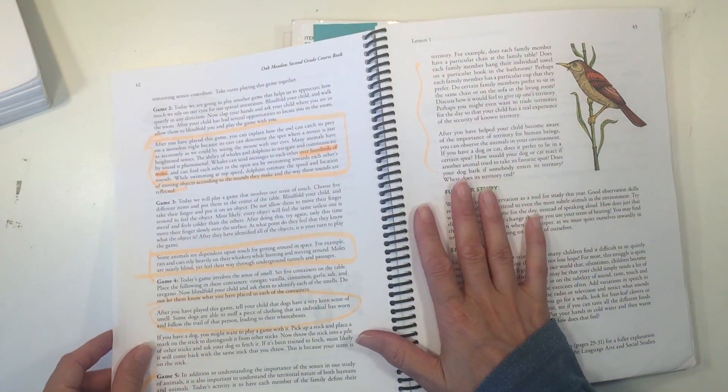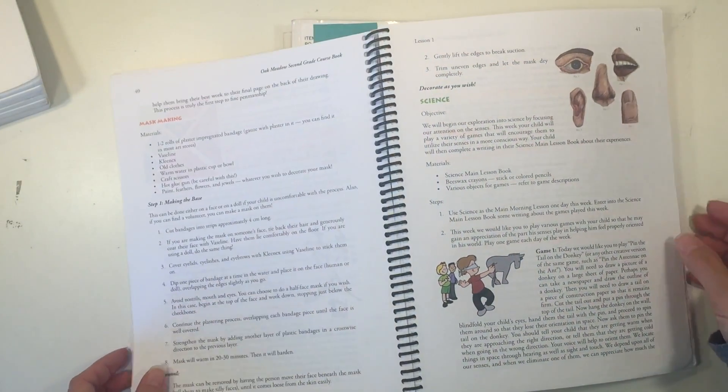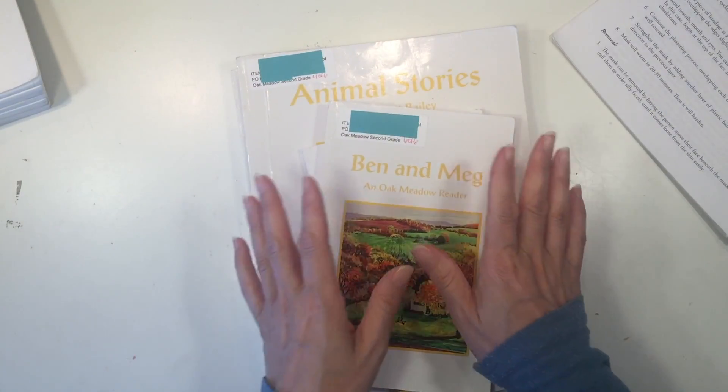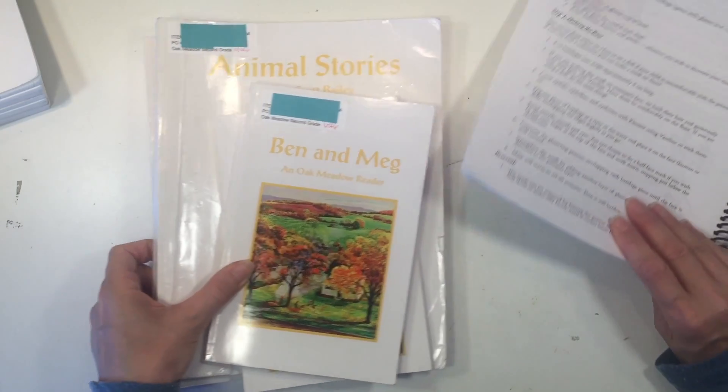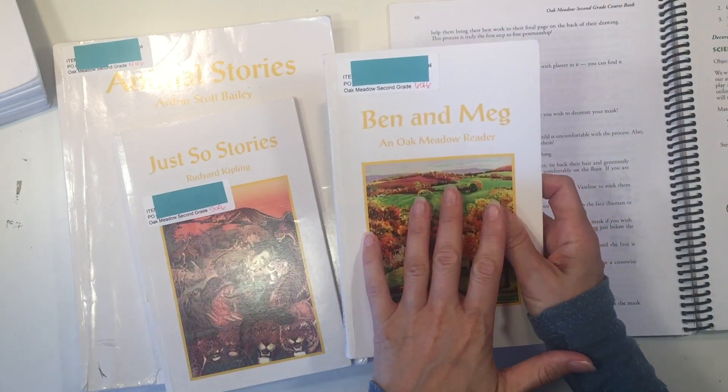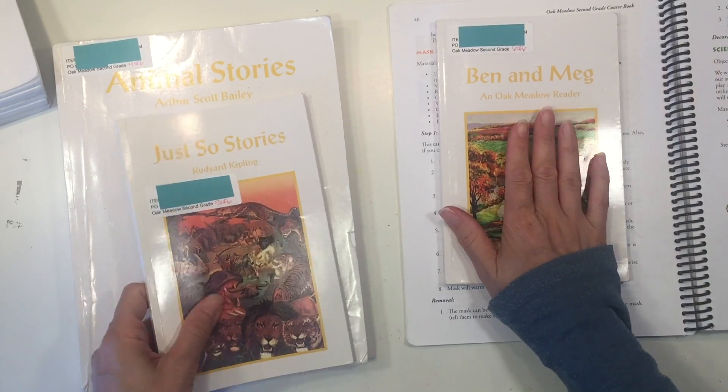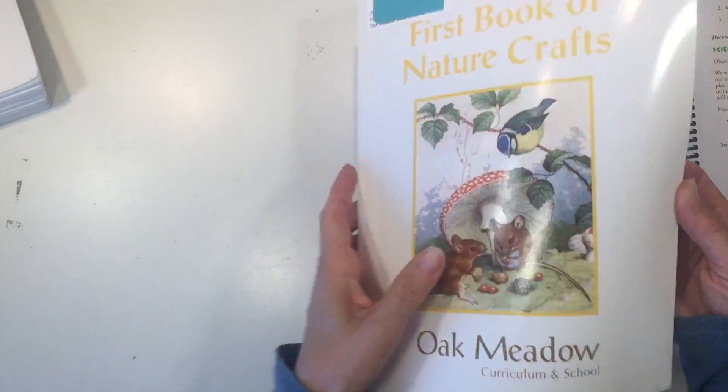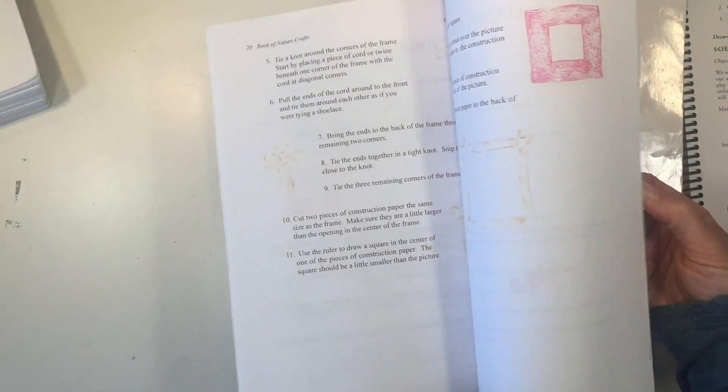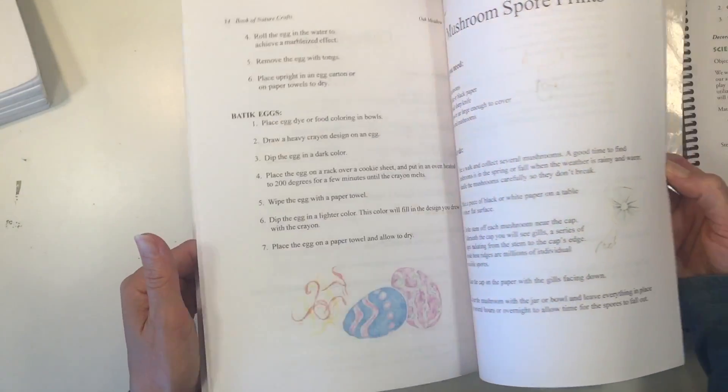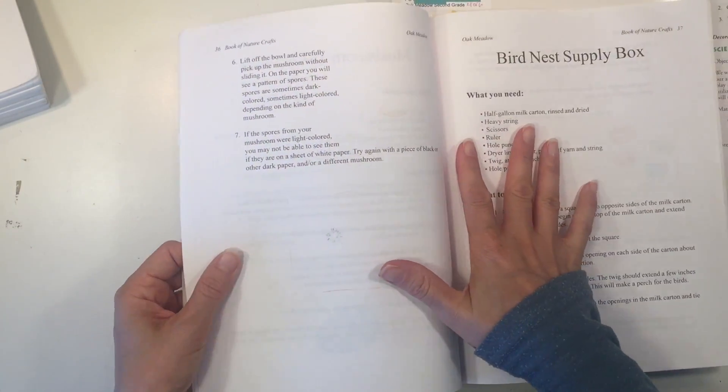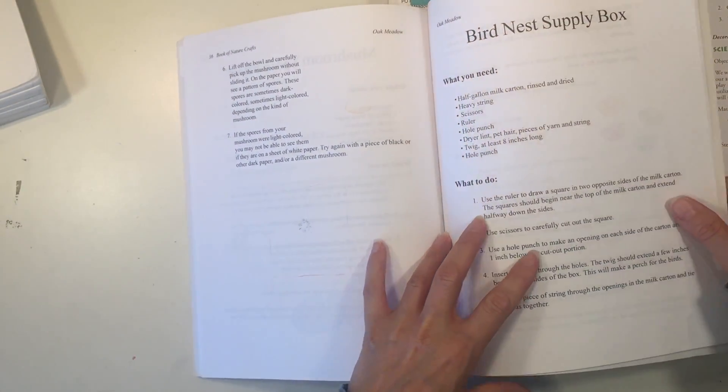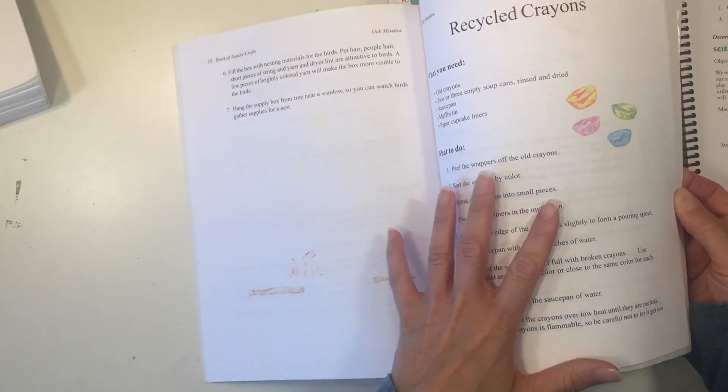And I do not have the health book. That might be the one that I am missing. Okay, so this particular curriculum also comes with these different source books that will coordinate with each week. So you have Ben and Meg, this is a first reader. You have Just So Stories. You have animal stories. And then you have your first book of nature crafts. And this will be a nice addition. If you're not sure what crafts to do, this will help you figure that out. It's really nicely laid out with the materials that you'll need and how to do the craft.